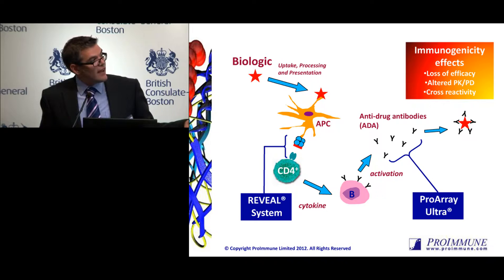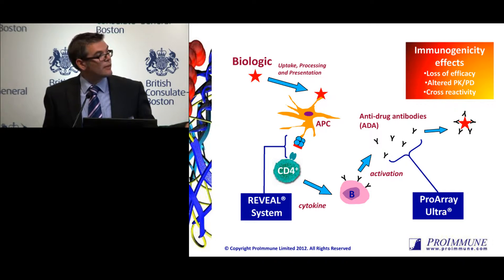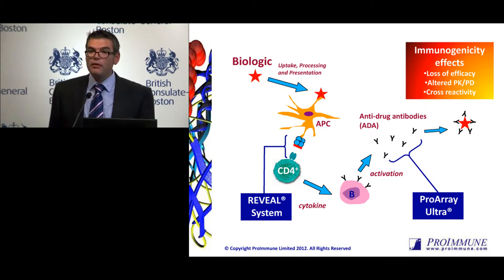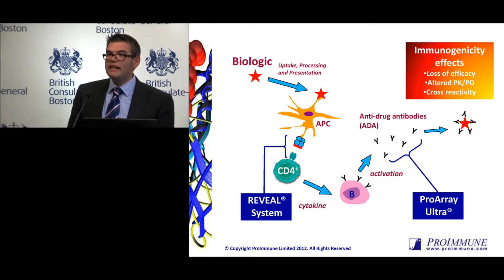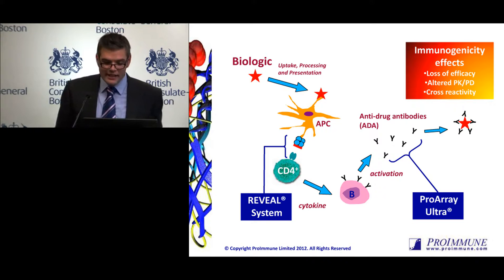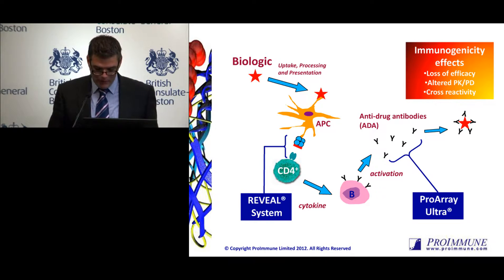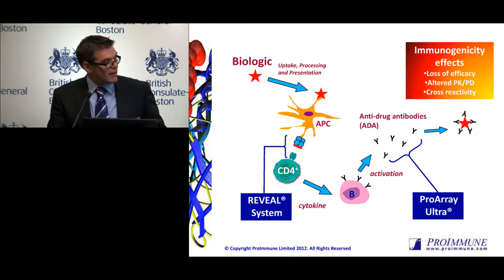Immunogenicity effects are numerous. We can have loss of efficacy, altered pharmacokinetics and pharmacodynamics, and also potential cross-reactive problems. Of course, if we can address them in preclinical development, that's a good thing, but it is more complicated than that. I'm also going to be talking about some of our other technologies to address the specificity of antibodies through our ProRay Ultra technology at the end of the talk.